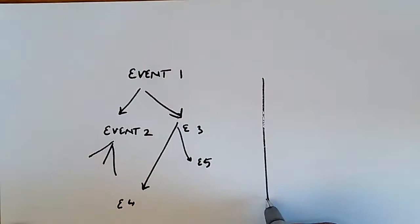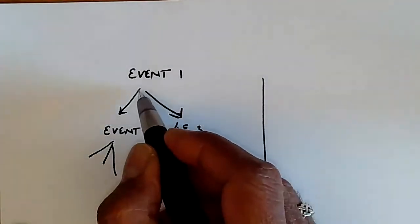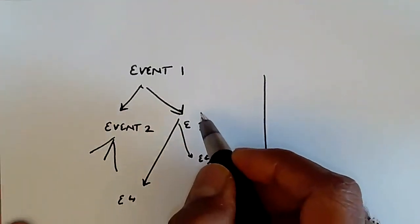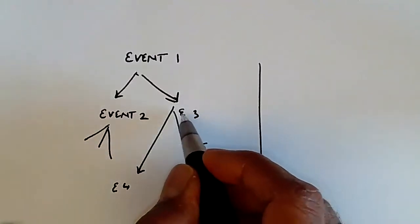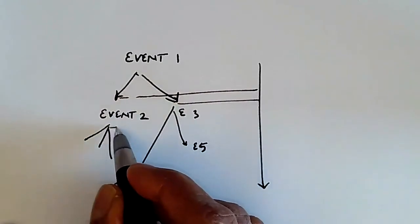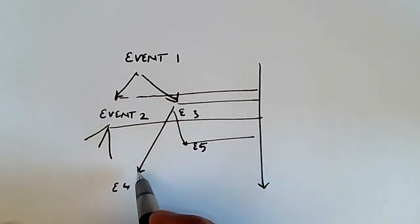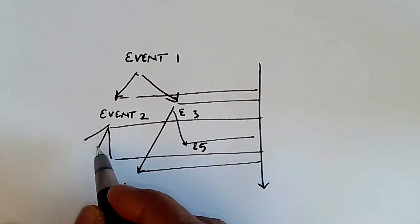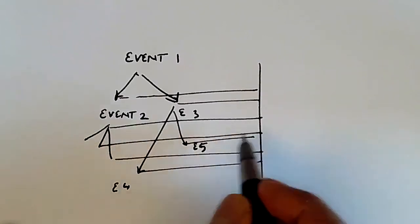And what I'm drawing over here, as you can see, is time. The position along the axis represents the time. So this event happens at this time, this happens at this time, and so on. I'm just drawing these lines to indicate the times at which these events happened.